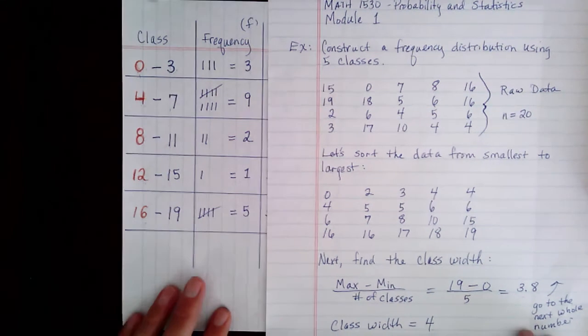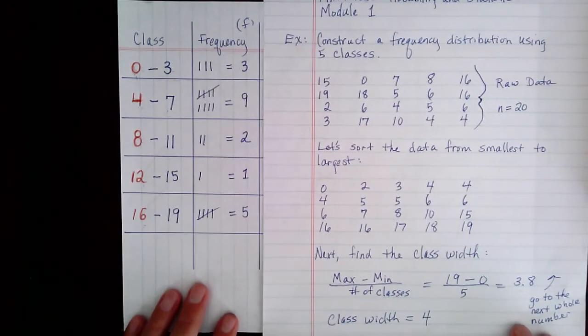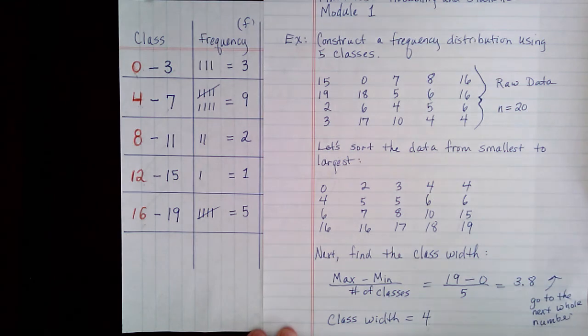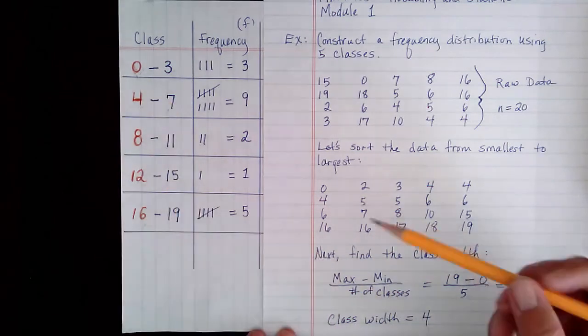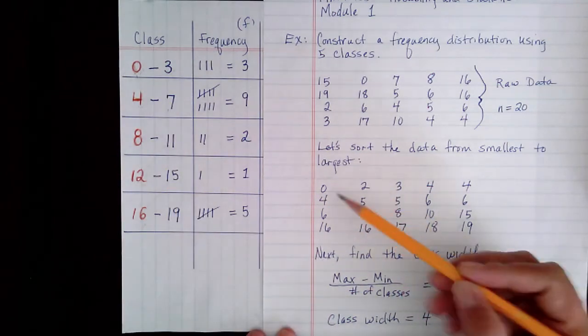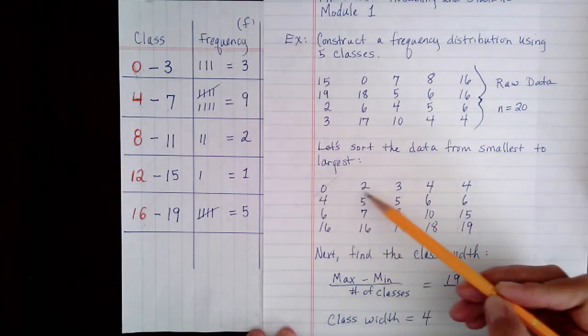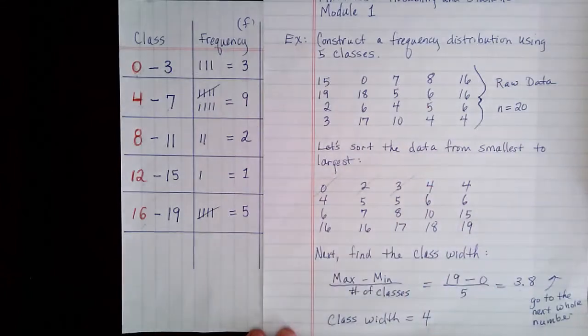Now, let's look at tallying out the frequencies. So now that the data is sorted from smallest to largest, it makes it much easier to just tally off how many data fall within each class. So the first class is between 0 and 3. So we can just count the number of data that are between 0 and 3. So I can count 1, 2, 3. So there are 3 data in that class.